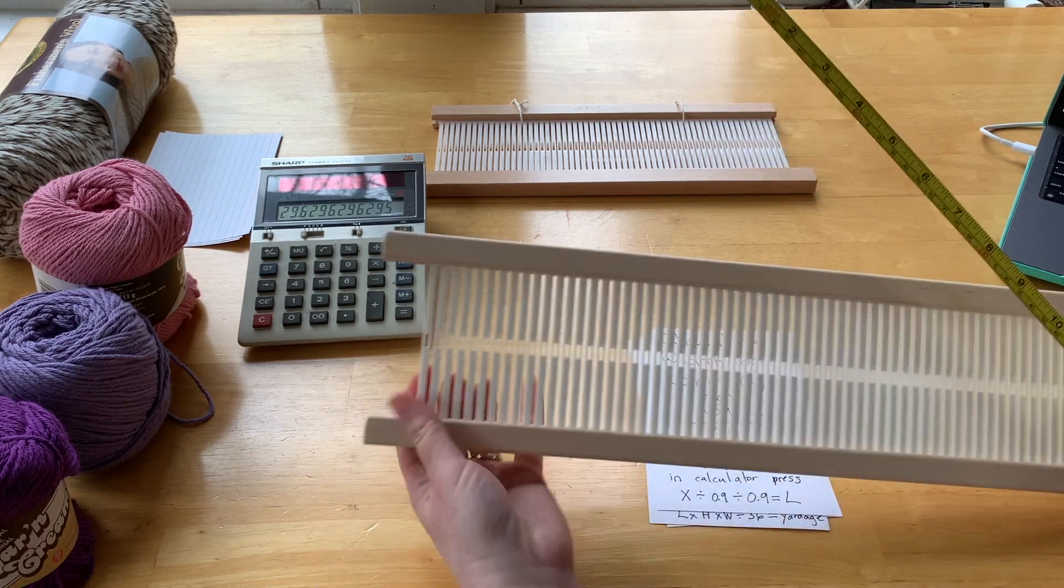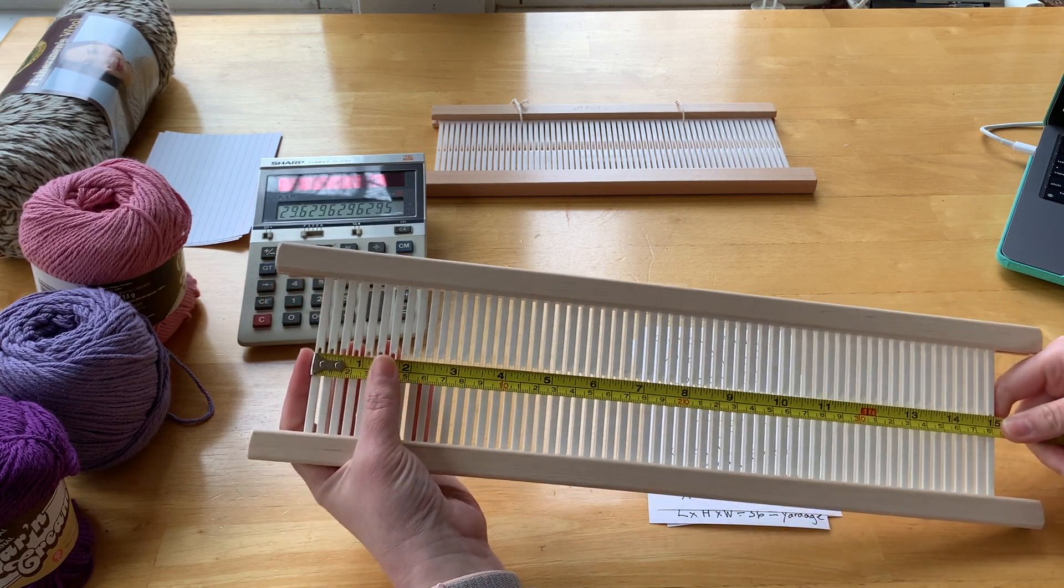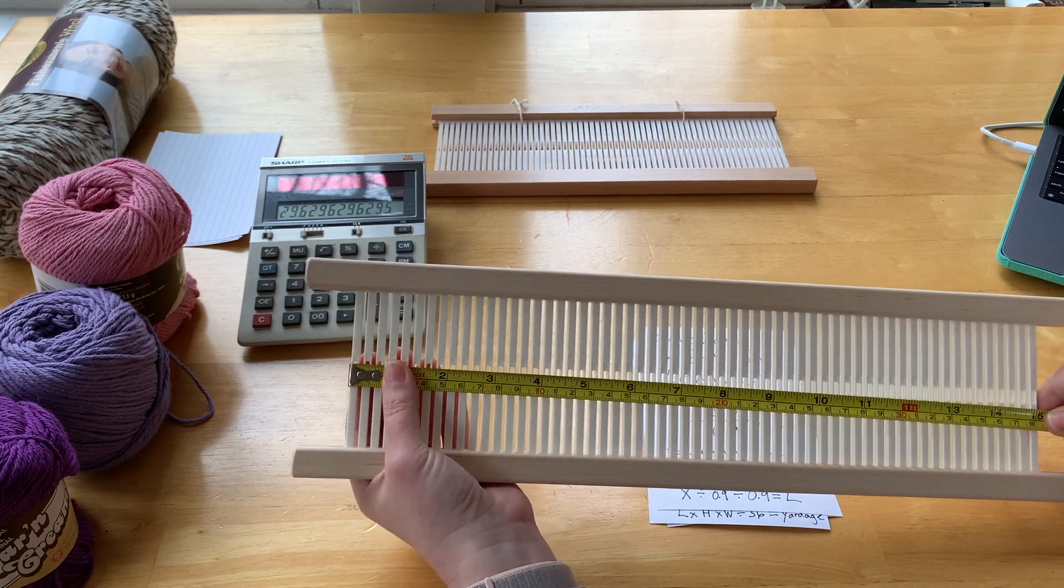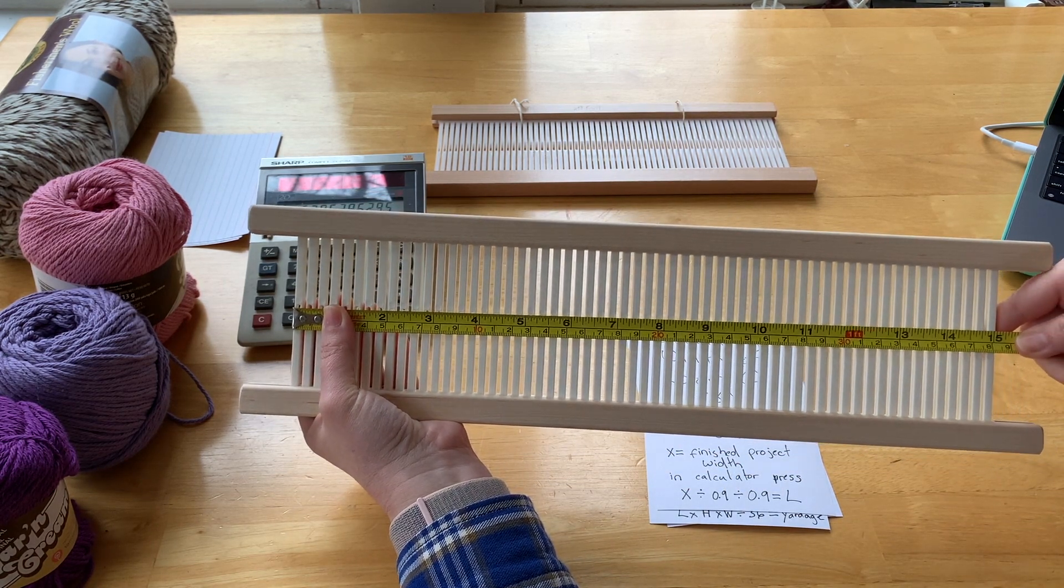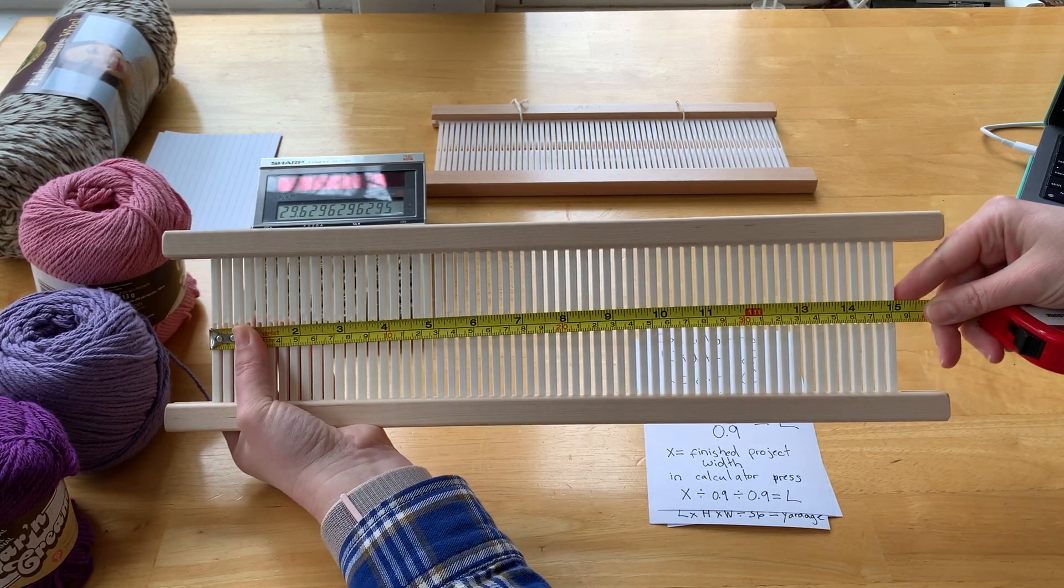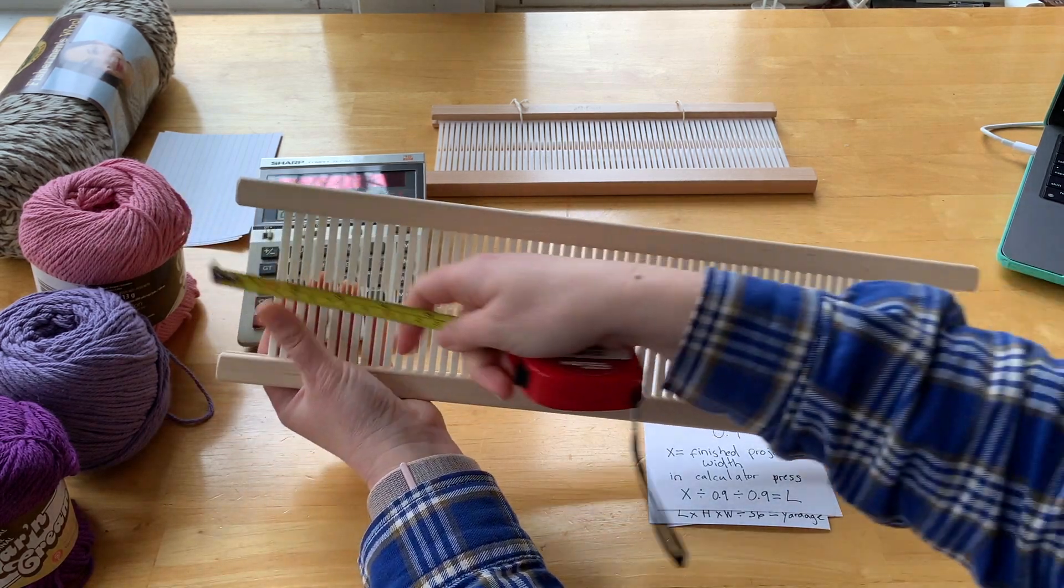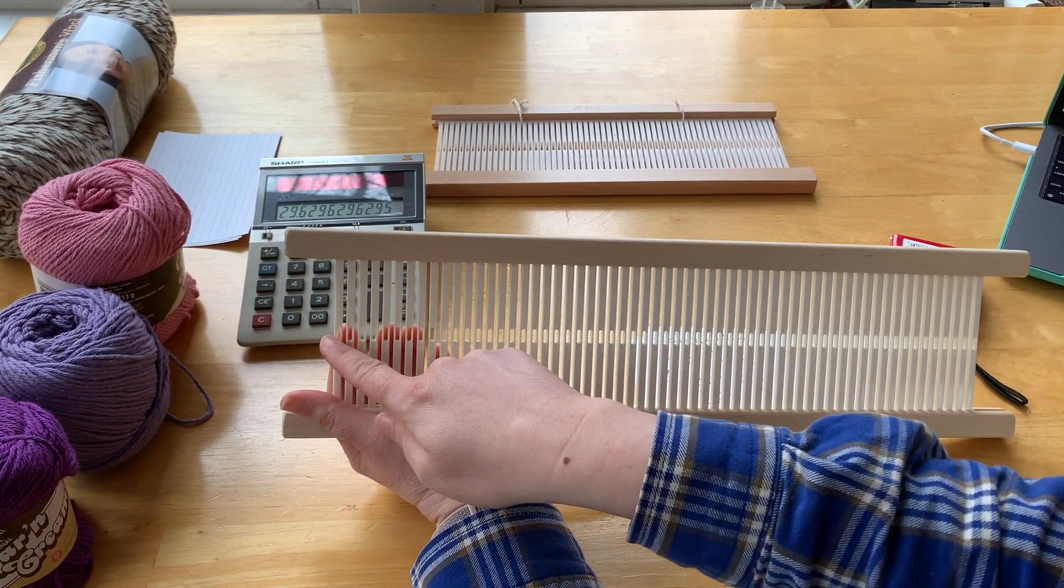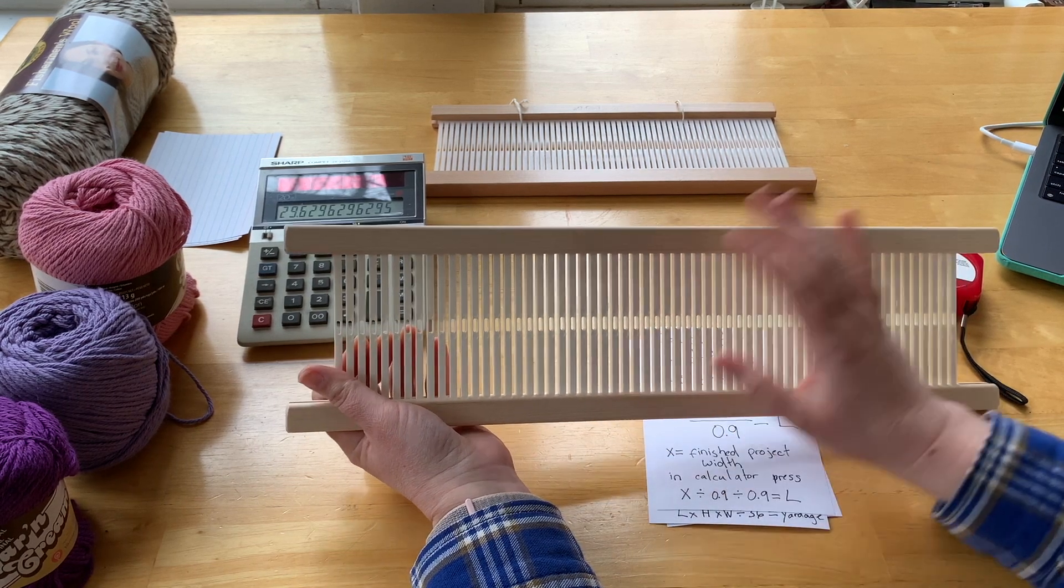How you check it is by putting your measuring tape right here, and you're going to measure from the outside of the left side of the heddle over to the outside of the right side of the heddle. And you can see there, that's a smidge more than 15—that's plenty good. The other thing you could do is you could actually sit down and count the holes.